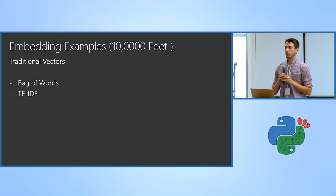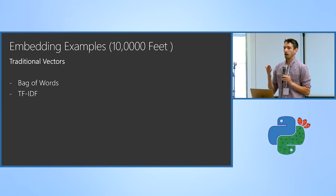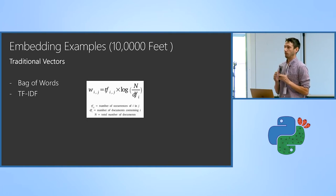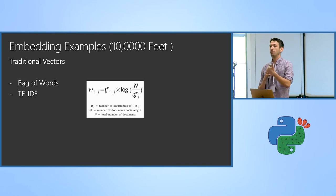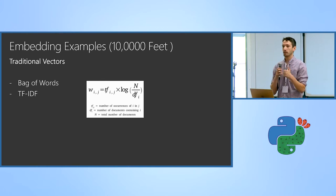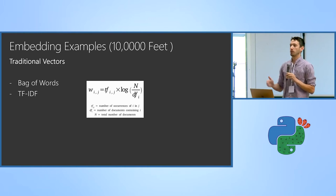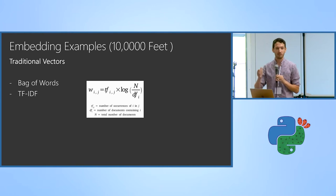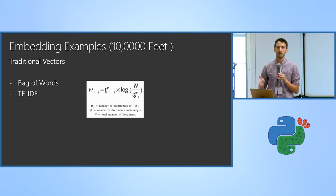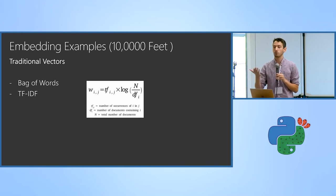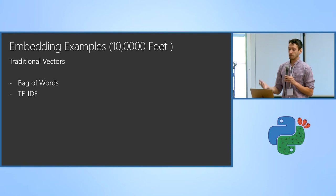One challenge with treating every word the same is that you're not thinking about context. The next advancement was weighting each word: instead of just putting a one, you put a score or weight based on which document it occurred in and how many times it appeared. For example, if you're building a classification system and a word appears 20 times in one document versus spread across 20 different documents, it has a very different distributional value. This was the concept of TF-IDF.